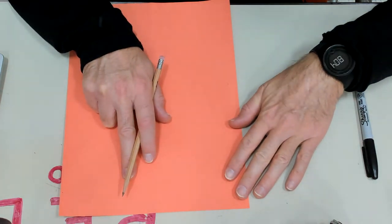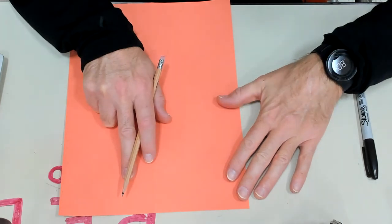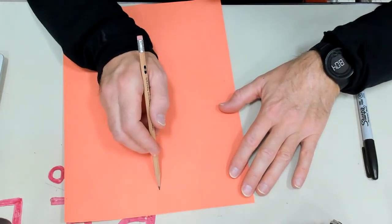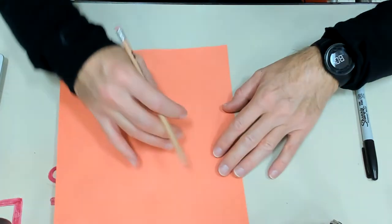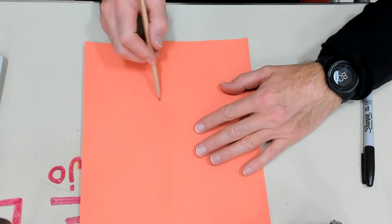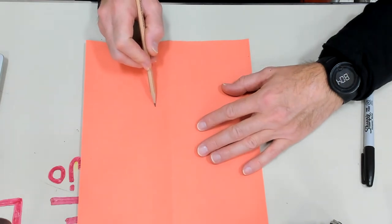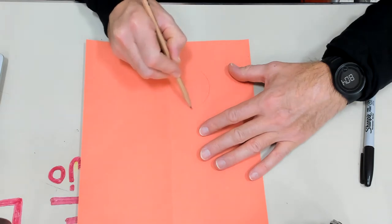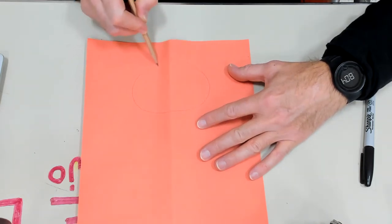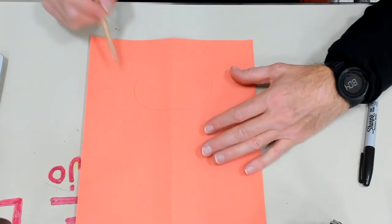Let me move it this way so you can see it in the right direction. So here's the top of my paper. I'm going to make an oval. It's about the same on both sides.